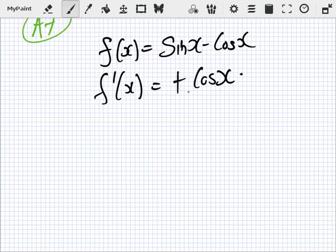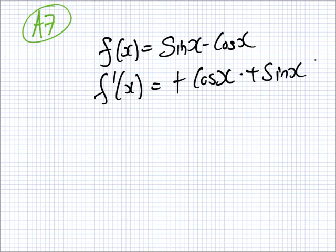Right, sine becomes positive cos and cos becomes positive sine. So here they give us a function, sine x minus cos x, and I wrote down what the derivative is. It's cos x plus sine x.